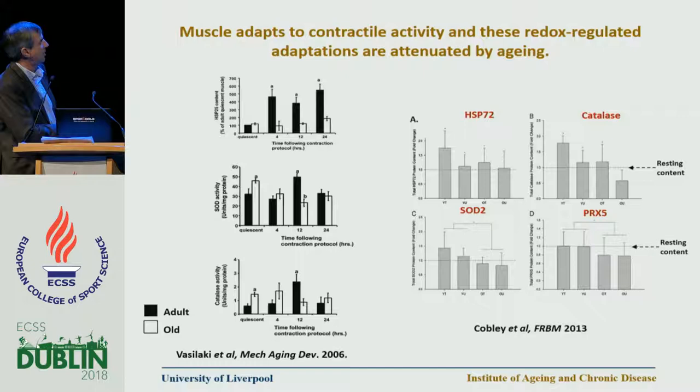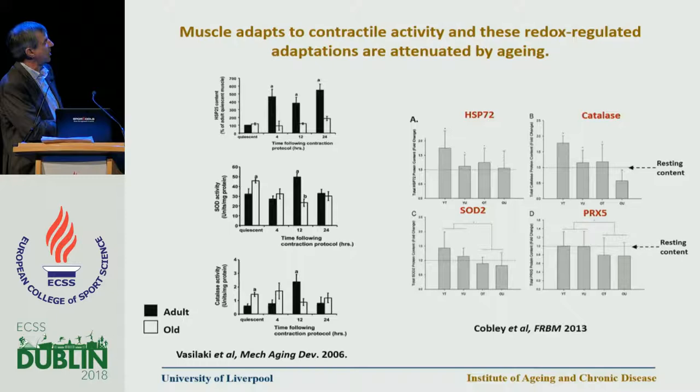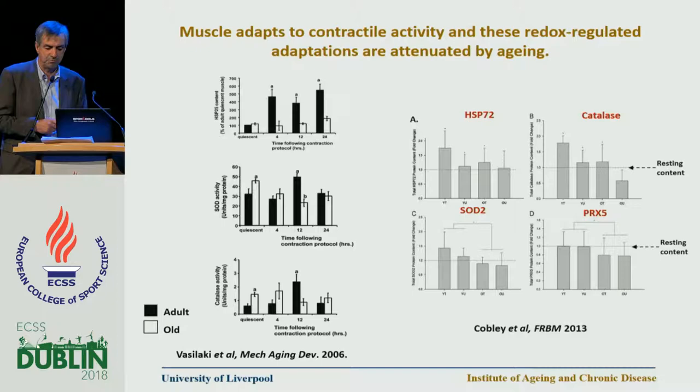This is work that Graham Close and James Cobbley did a few years ago, looking at the effects of age on adaptations and responses to exercise in humans. If you take the younger subjects at one end of these graphs and the older subjects at the other, there's a much less dramatic effect in the older subjects — which is exactly what we see in our animal studies. That's one of the reasons why we're interested in the effects of aging.